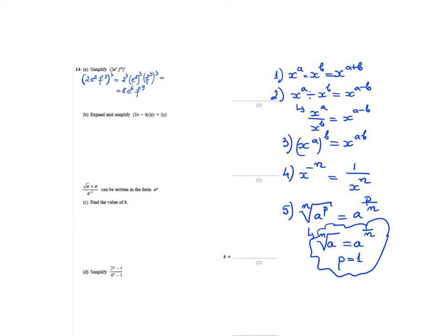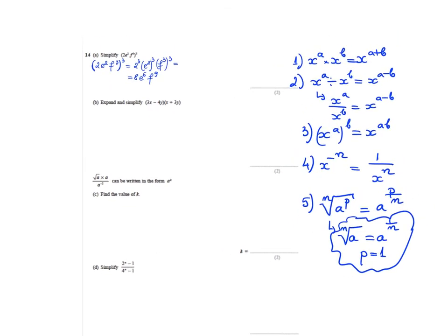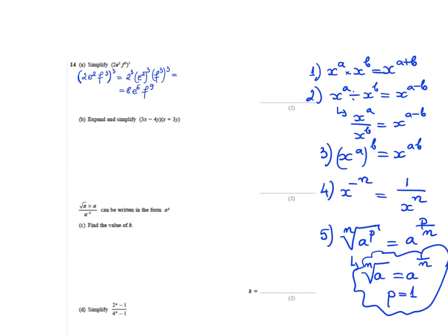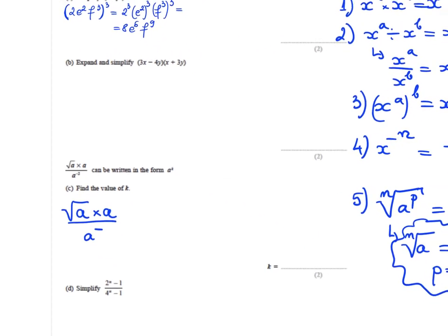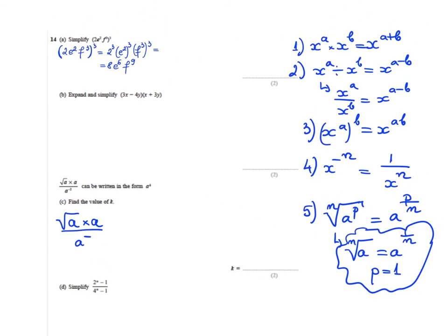Let's jump to question c because question c uses the same rules of indices. I need to show that √a × a / a^(-2) can be written as a single power of a.